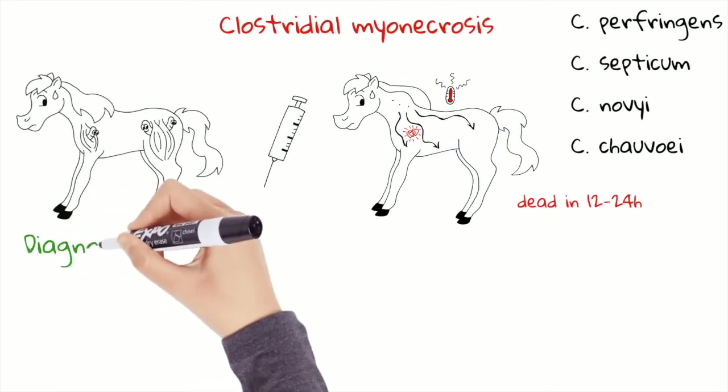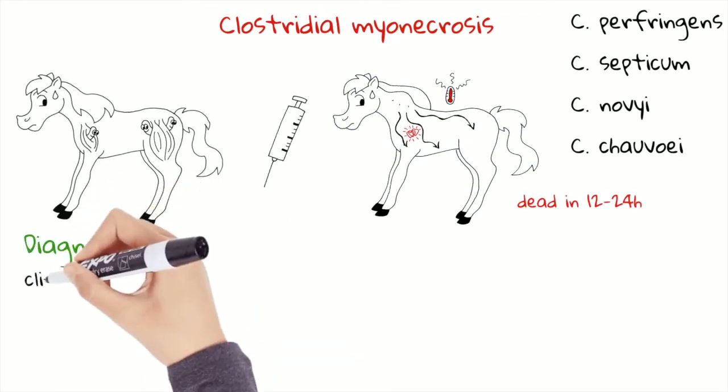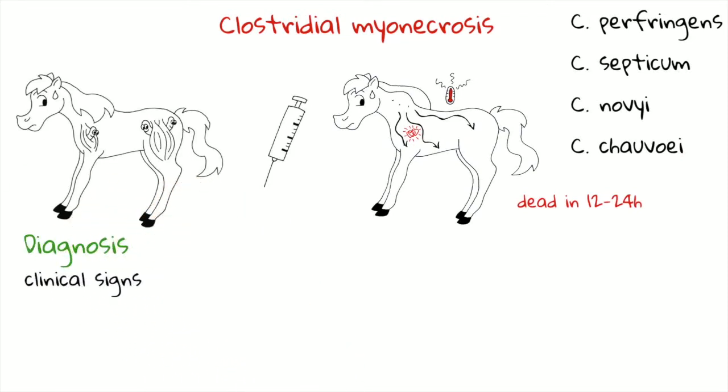How to reach the diagnosis? Well, clinical signs are quite characteristic — I saw a few cases and really they are difficult to forget. In a few hours the horse swells like an elephant. In the description of this video I will leave you the link to the University of Minnesota, where you can find the document on clostridial myonecrosis written by Stephanie Wahlberg, and there you can find also some pictures to have an idea of the disease.